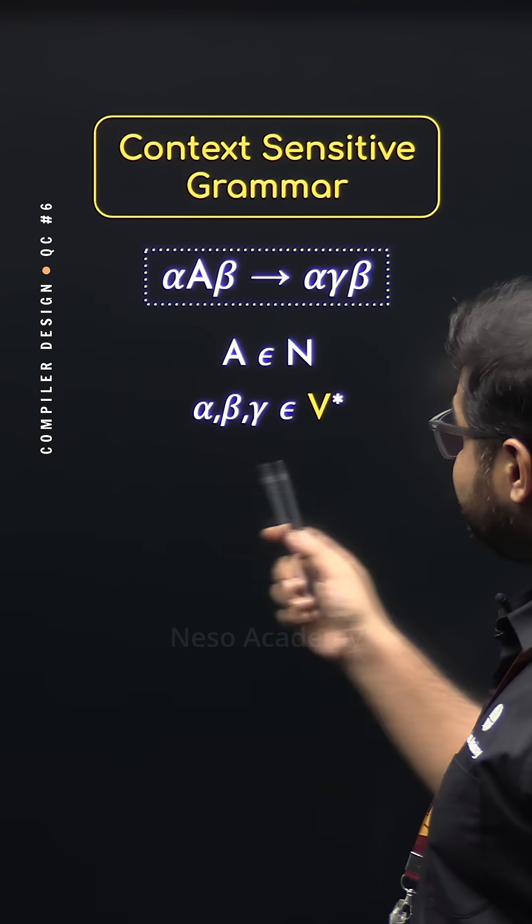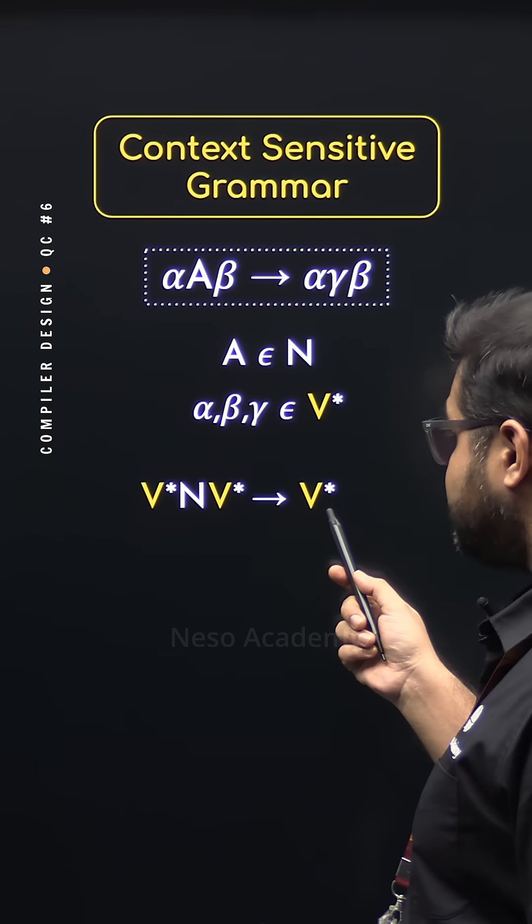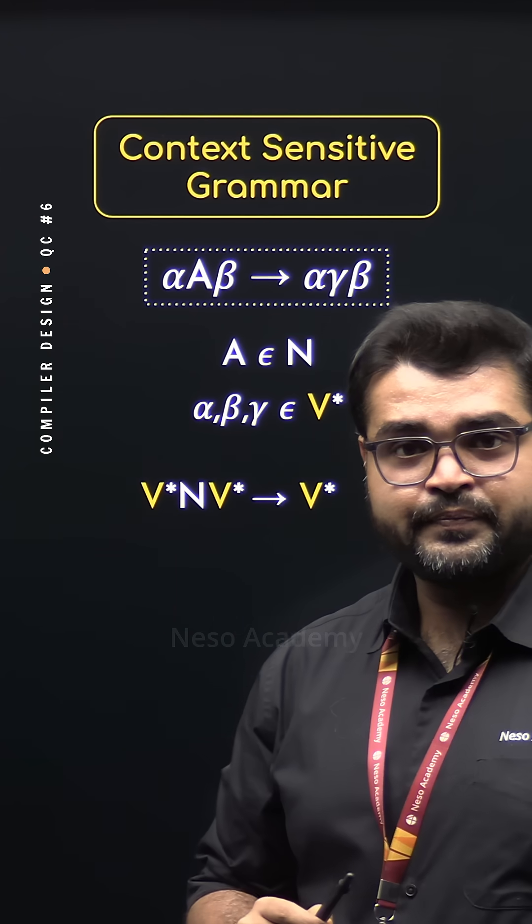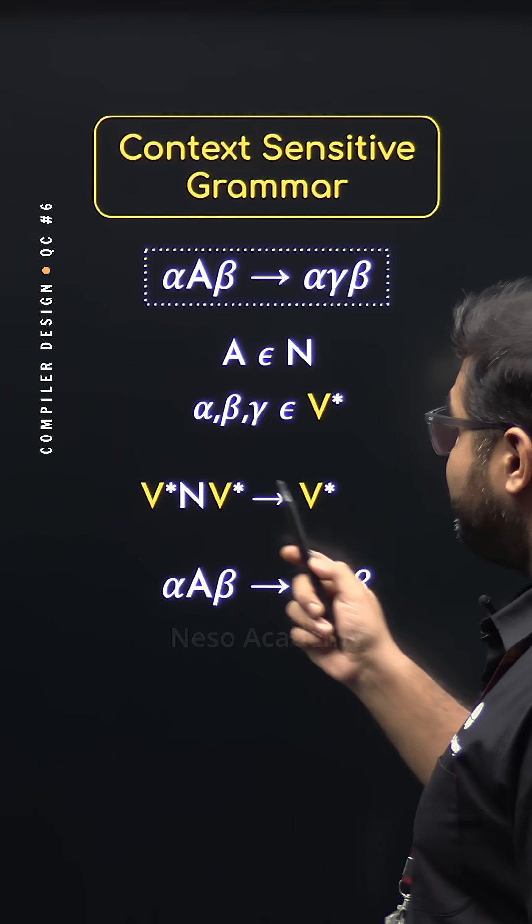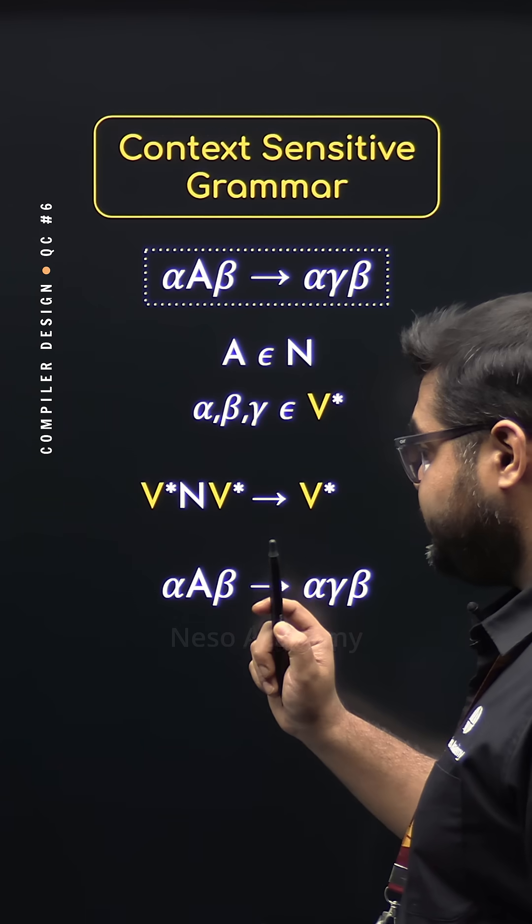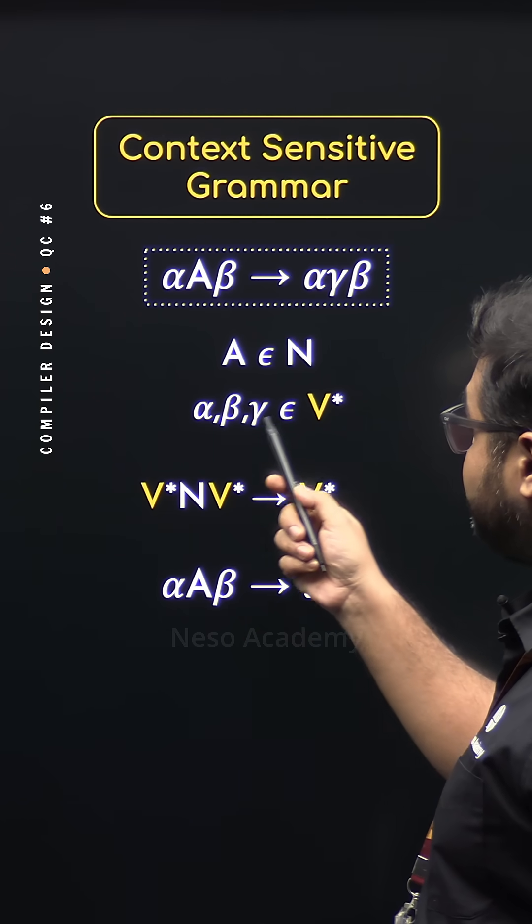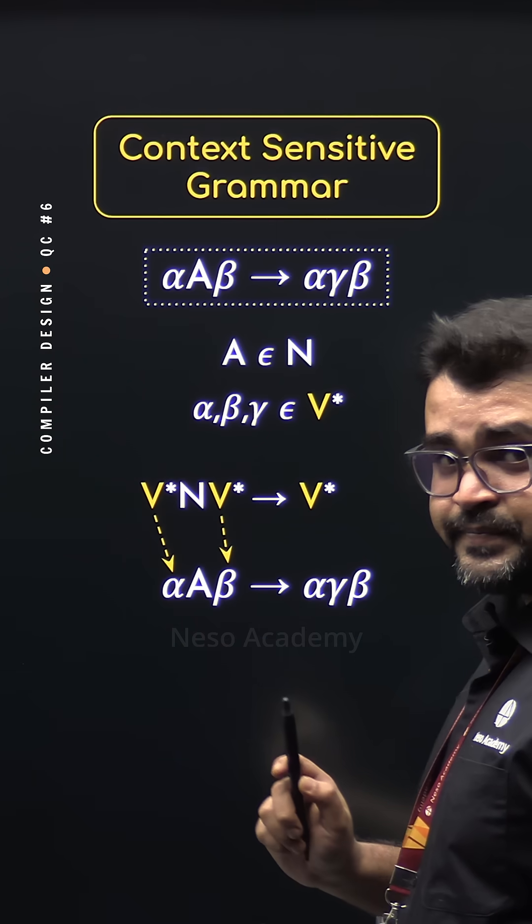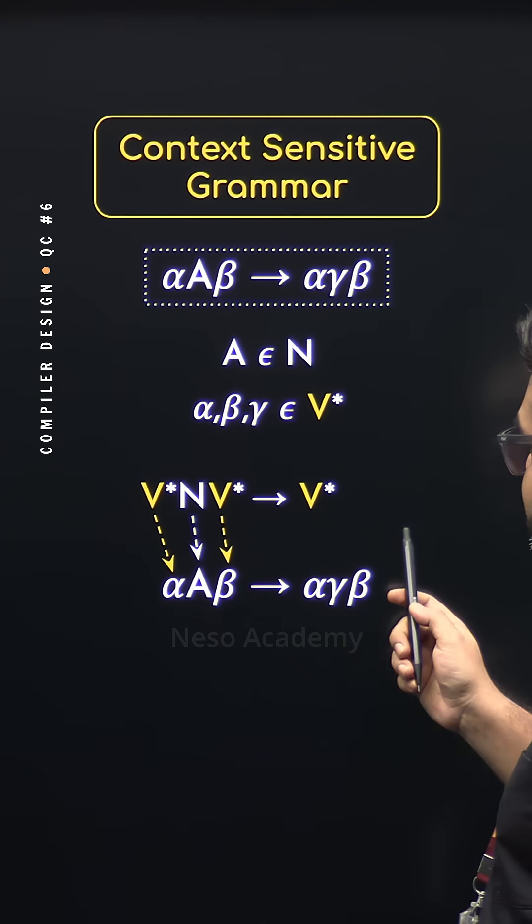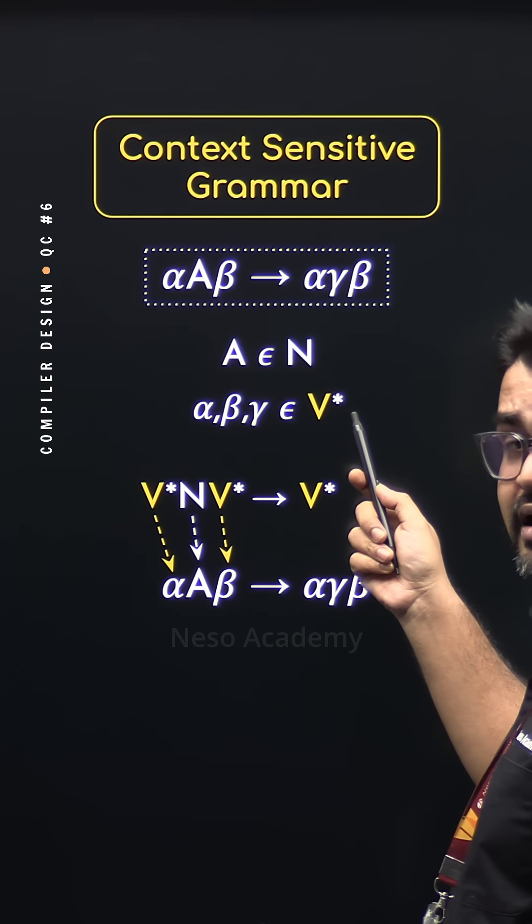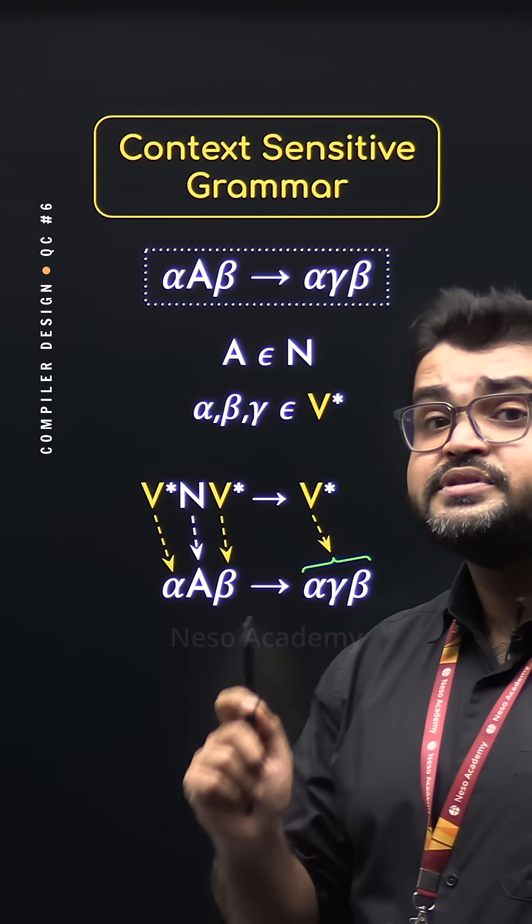Now I told you, this is a subset of type 0. Let me show you how. Now, V star and V star can be rewritten as V star. This is the form of the production rule followed in type 0. Now if you take this production rule's form, notice, on type 0's form, we have got V star in either side of N. Here also, we have got alpha and beta on the sides of A. I told you already, alpha, beta belongs to V star. So these are nothing but these V stars. A belongs to N, so A is clearly this non-terminal N. Now what about the right-hand side? Alpha, beta, gamma belongs to V star. So this entire thing is the V star. So this is how type 1 becomes the subset of type 0.